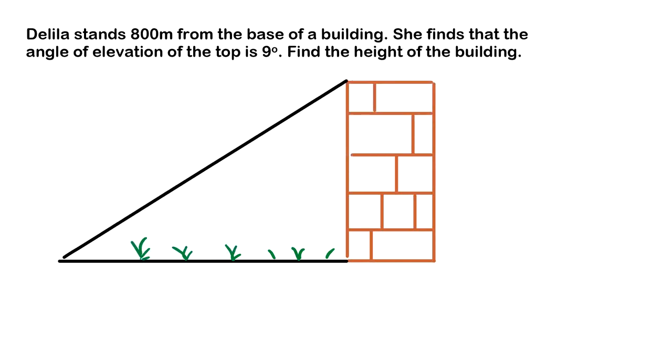We'll be looking at this angle here, and that is 9 degrees. The next thing we know is she's 800 meters away. We need to find the height, so that is x. Remember when you're doing these trigonometric questions, your first step is to label your sides.